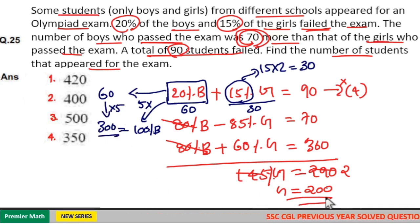So, 300 plus 200 is 500. Option 3 is your answer. That is, total number of students is 500.